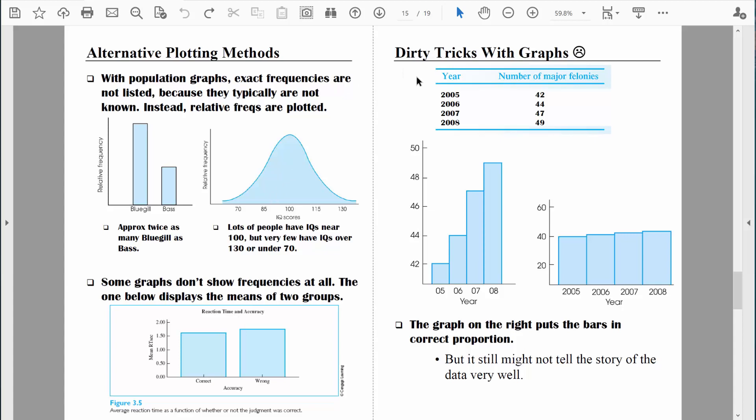Well, sometimes people engage in dirty tricks with their graphics. Here are some numbers from a few years ago for some hypothetical city counting the number of major felonies over the past couple years. The numbers go from 42, 44, 47, 49, so it does look like major felonies are to some extent on the rise. Look at the story that this graph tells compared to this graph, and both of those graphs are plotting the exact same values. Most statisticians would agree that this particular graph right here is somewhat unfair. It's misleading because the bars are not sized in proportion to their values.